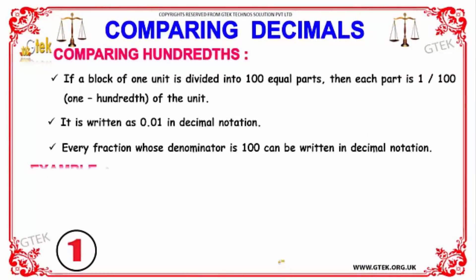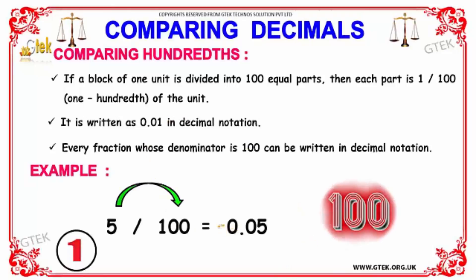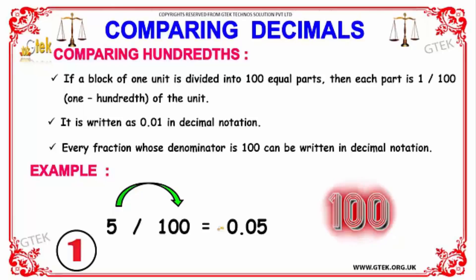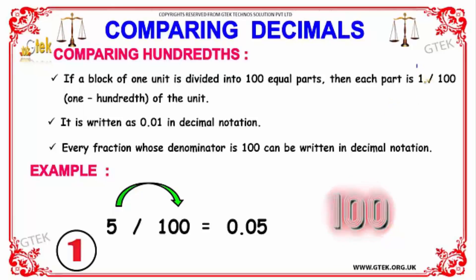Now let's move on to the comparison of hundreds. If a block of one unit is divided into 100 equal parts, then each part is 1/100 of the unit, which can be represented as 0.01 in decimal notation.